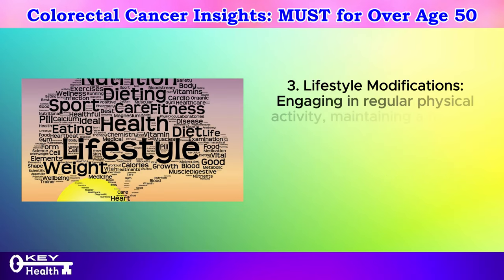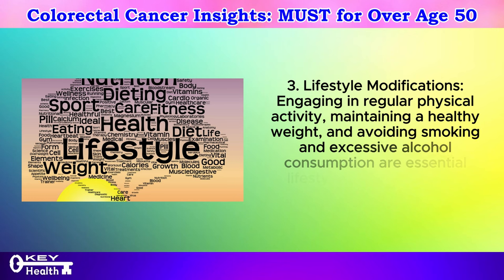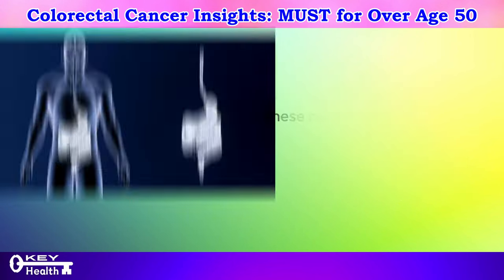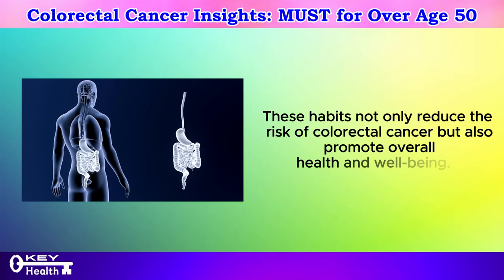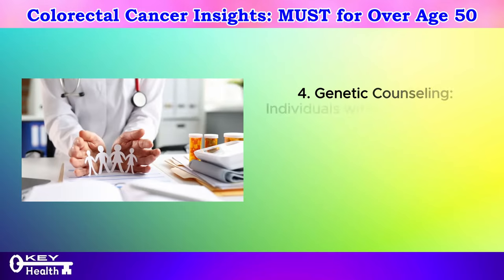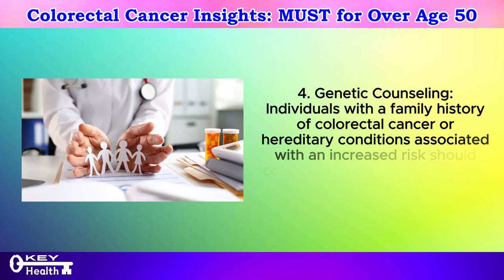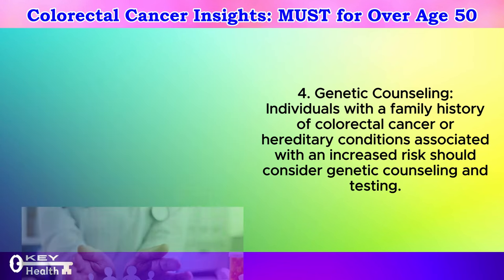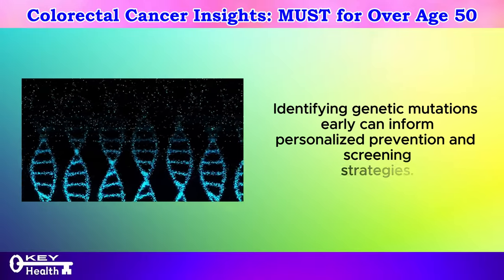Prevention strategy 3: Lifestyle modifications. Engaging in regular physical activity, maintaining a healthy weight, and avoiding smoking and excessive alcohol consumption are essential lifestyle modifications for colorectal cancer prevention. These habits not only reduce the risk of colorectal cancer but also promote overall health and well-being. Prevention strategy 4: Genetic counseling. Individuals with a family history of colorectal cancer or hereditary conditions associated with an increased risk should consider genetic counseling and testing. Identifying genetic mutations early can inform personalized prevention and screening strategies.